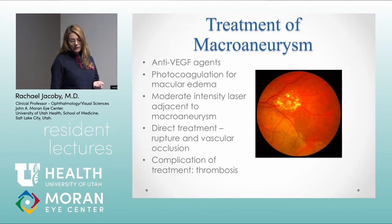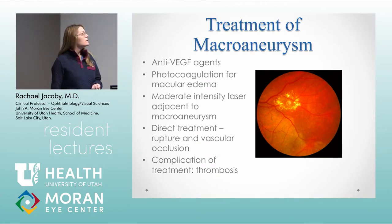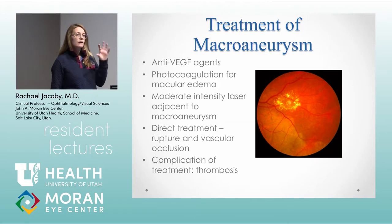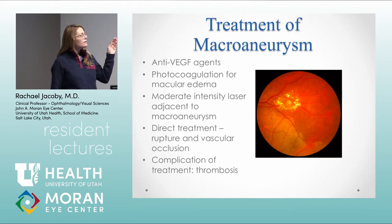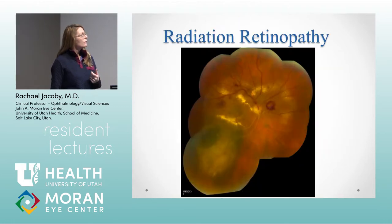Some advocate for anti-VEGF agents for macroaneurysms, though that's not as common. More commonly you would see photocoagulation either around or directly on the macroaneurysm to help it involute if it's quite leaky. The risk of treating the macroaneurysm directly is that it can lead to downstream vascular occlusion.